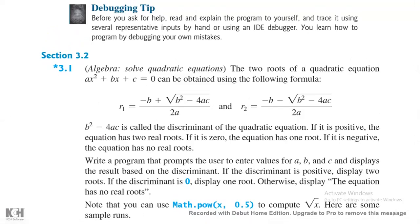As you guys can see: r1 is equal to minus b plus the square root of b squared minus 4ac, all over 2a; and r2 is equal to minus b minus the square root of b squared minus 4ac, all over 2a.